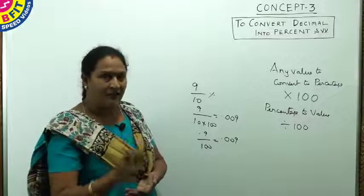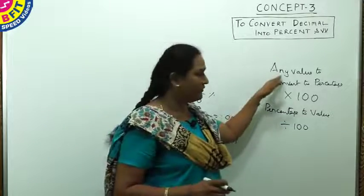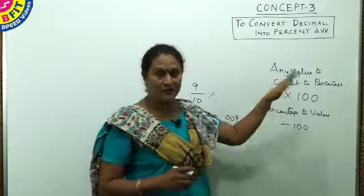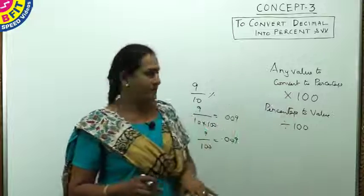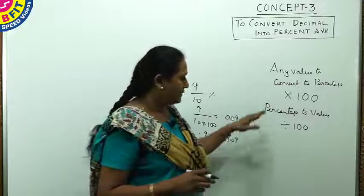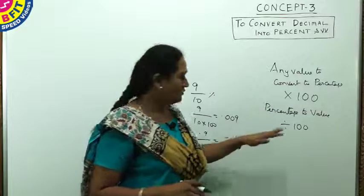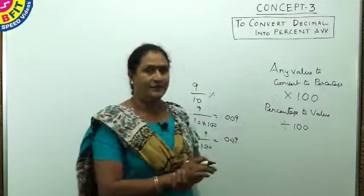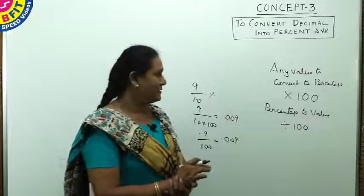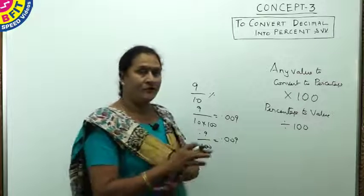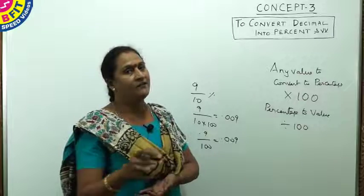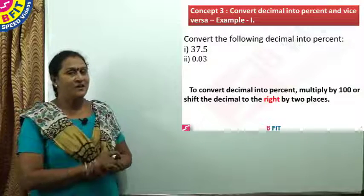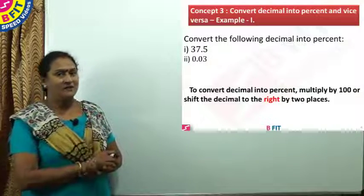Simply, to find the percentage of any value, multiply it with 100. And given a percentage to find the value, divide it with 100. Now we will see a few examples of how to convert decimals to percentages and vice versa.